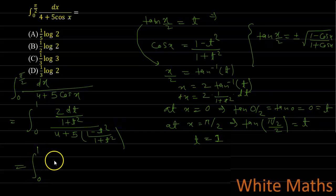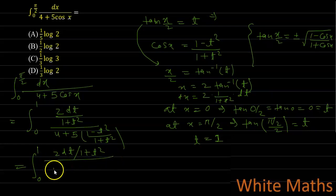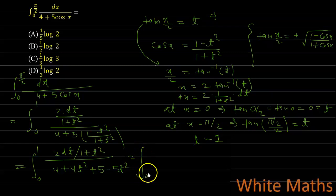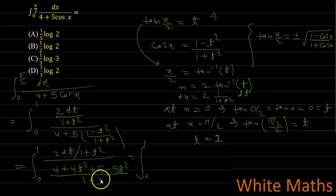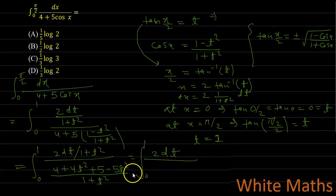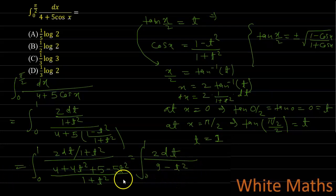Taking LCM, the integral from 0 to 1 becomes: numerator 2dt/(1 + t²), denominator (4 + 4t² + 5 − 5t²)/(1 + t²). The (1 + t²) factors cancel out. The denominator simplifies to 4 + 5 = 9 and 4t² − 5t² = −t², giving 9 − t². So the integral becomes ∫₀¹ 2dt/(9 − t²).